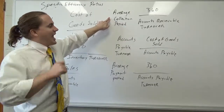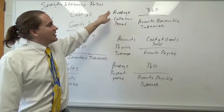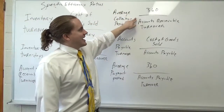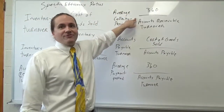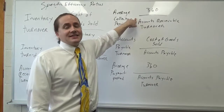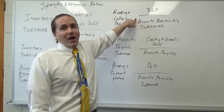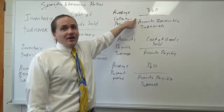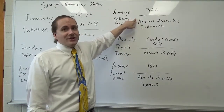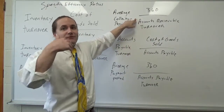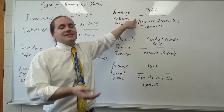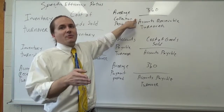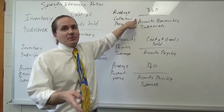This is the average collection period. Let's say I have the number 45 — it tells me that throughout the year on average it takes me about 45 days to collect all of my accounts receivable.